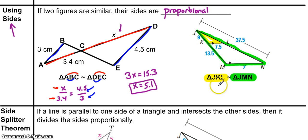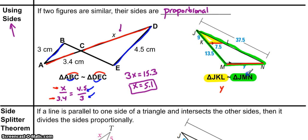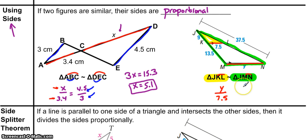Let's start writing our ratio, starting with variable Y. Y is M to N and 7.5 is K to L — those are both the last two letters and they're both the bottom of that triangle. So I can write Y over 7.5. Now I need another side. I could use the 37.5 side, but there's no other information given about the smaller parts there. Instead, I'll use this side here.